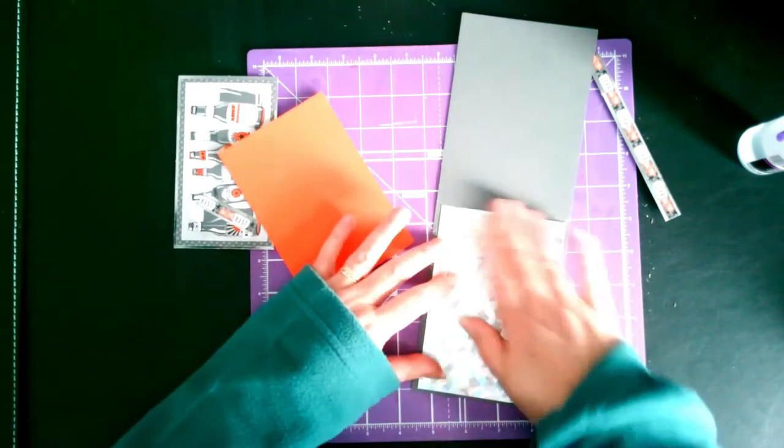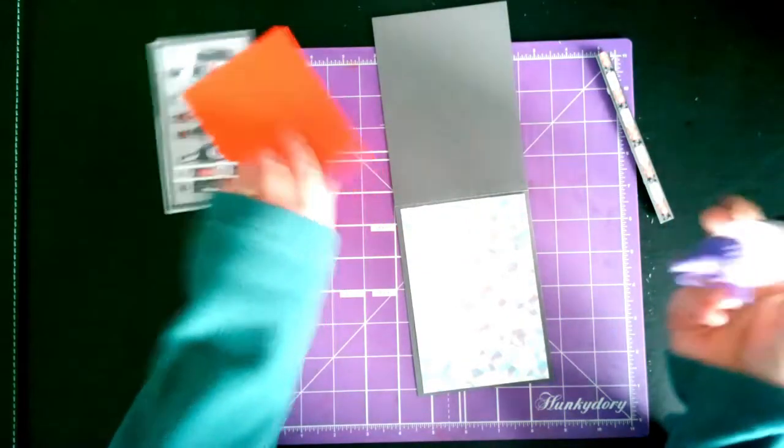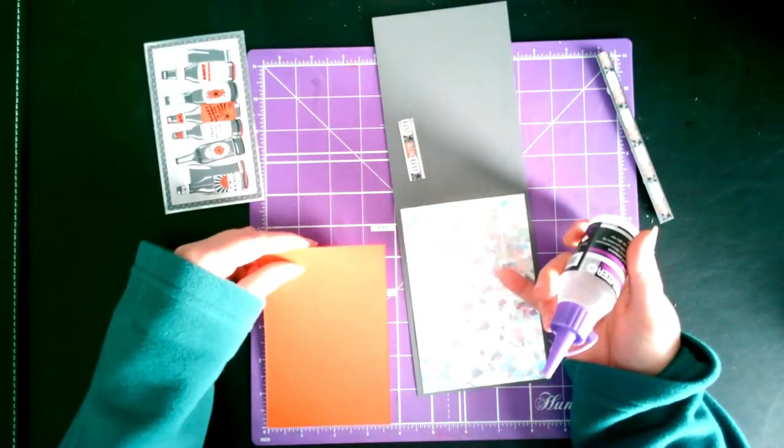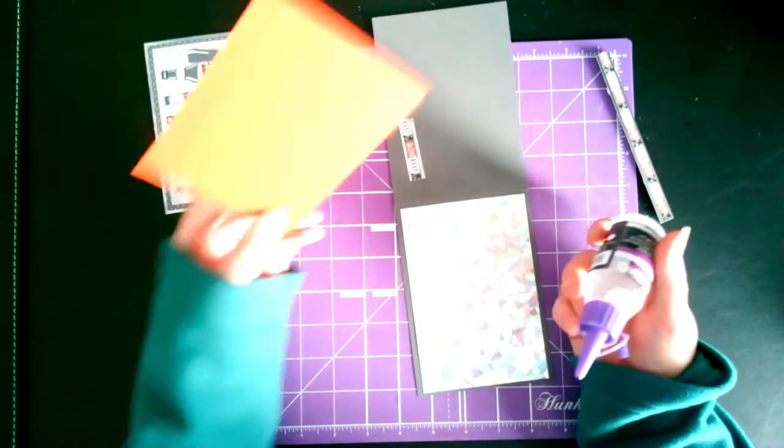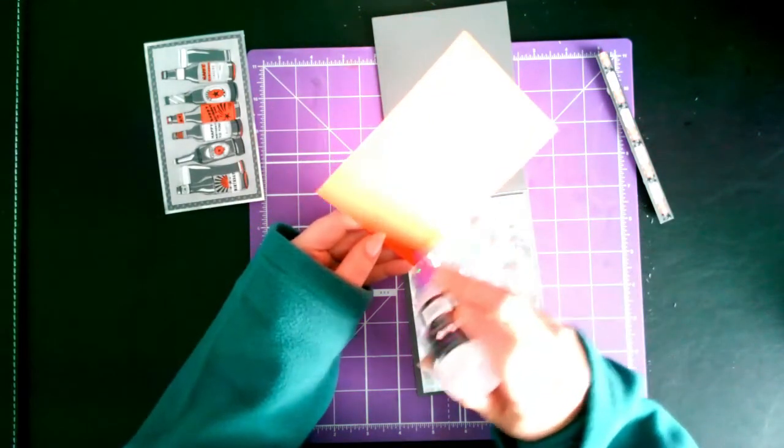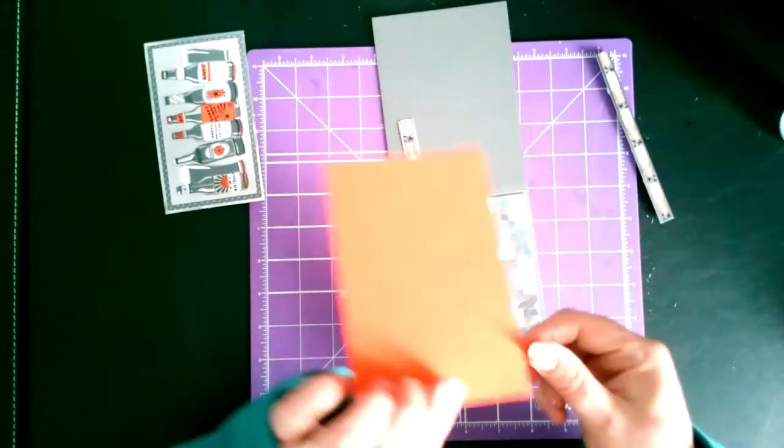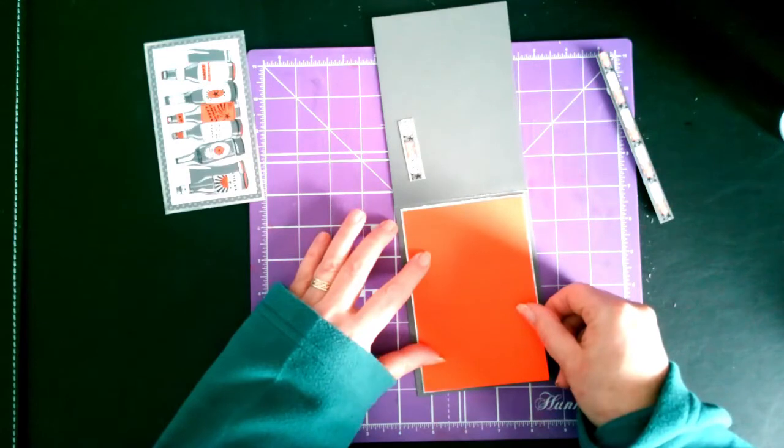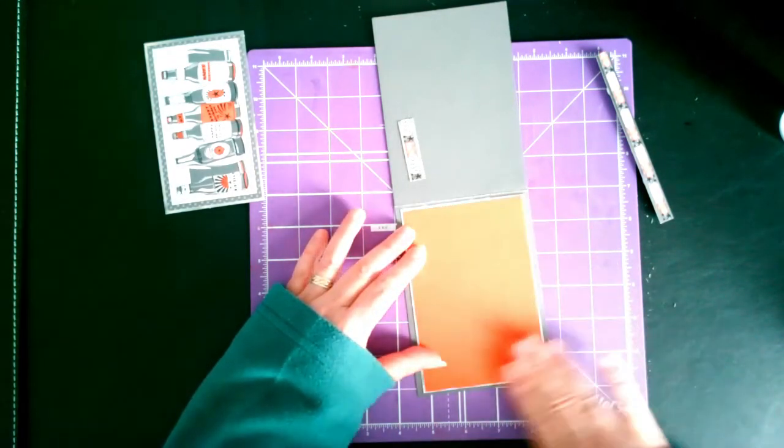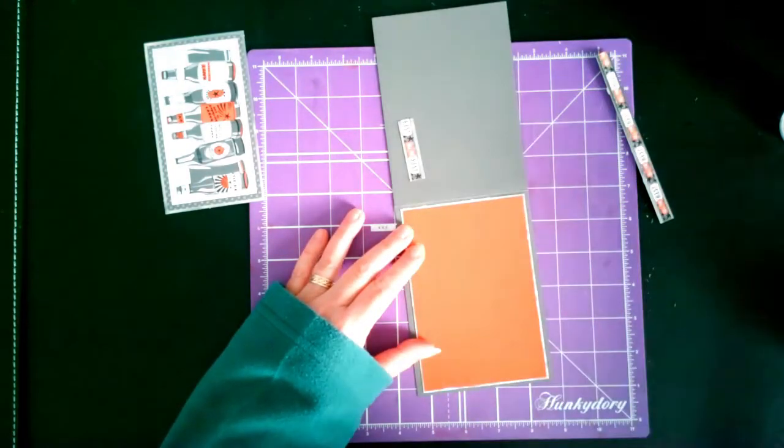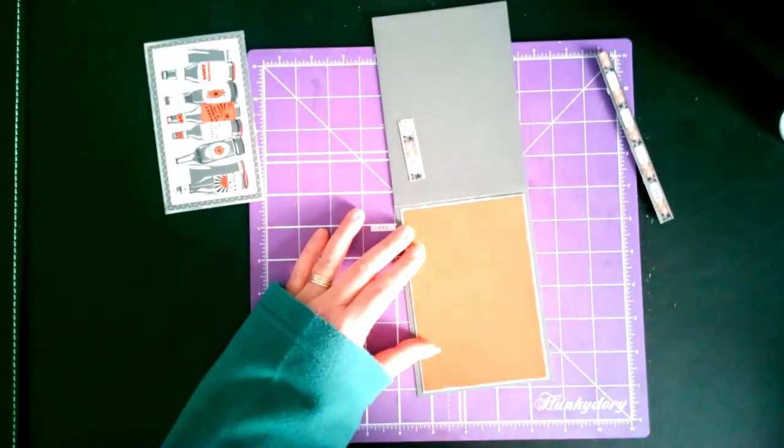Like so, this is going to be a card under 10 minutes. And then some orange which is three and six eighths by five and a half. Place that on, make sure you've got a little bit around the edge. And this could be for a grandad, you know, that type of thing.